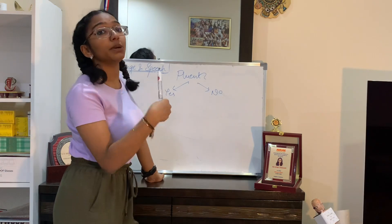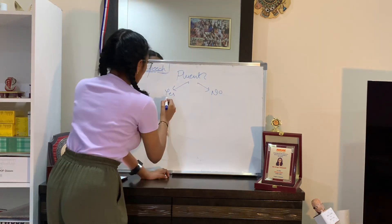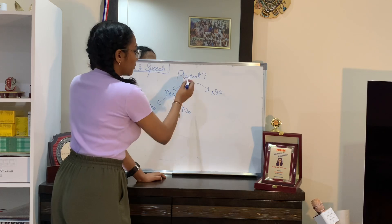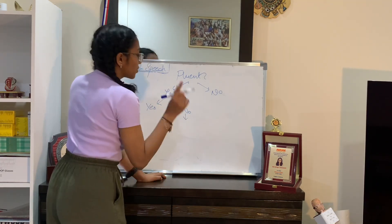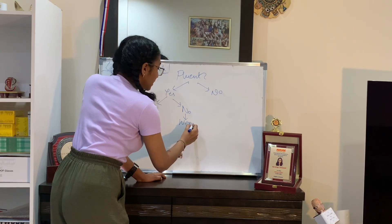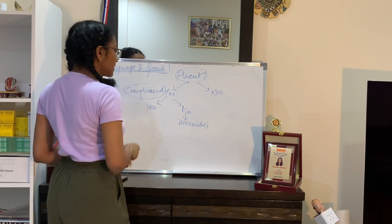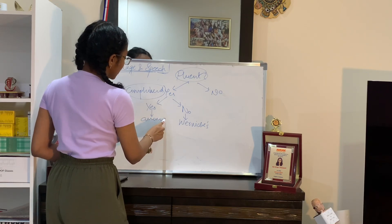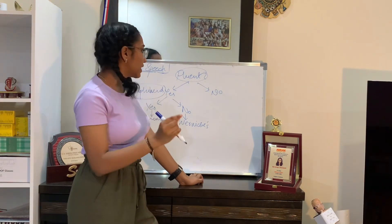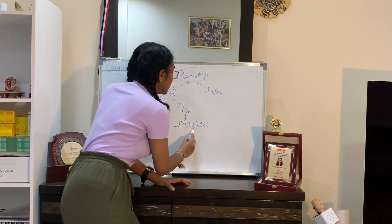If the speech is fluent, we ask a second question: can the person comprehend what is being spoken or written? If fluent but unable to comprehend, we ask one more: can the person repeat the sentence? If they cannot repeat, it is Wernicke's aphasia. If comprehension is intact but the person can't find words for thoughts, that is anomic aphasia — the mildest form — with a lesion in Wernicke's area.